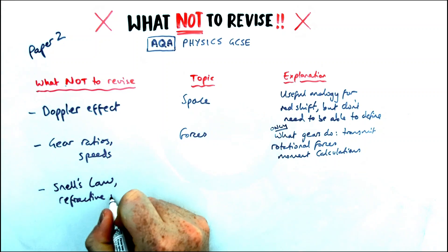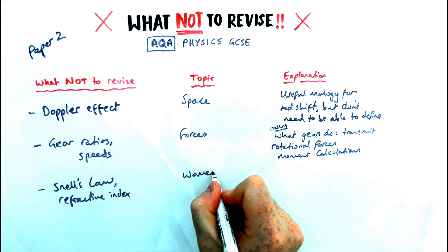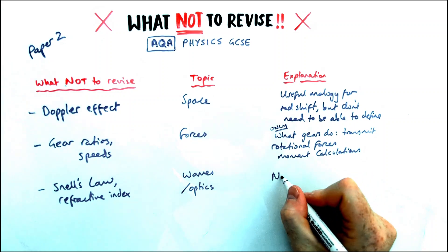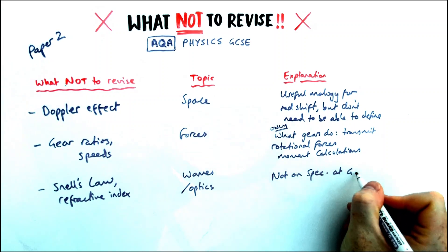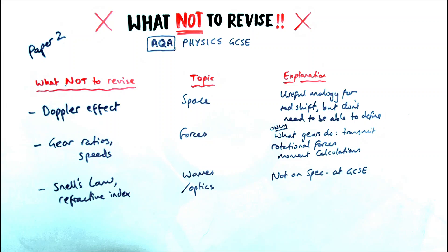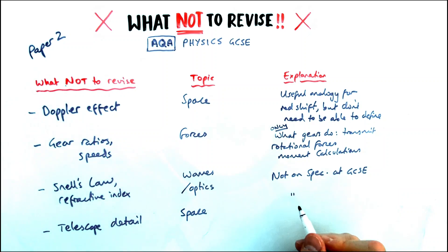Another thing you don't need to know about is refractive index, that is on other exam boards, and something called Snell's Law. It's to do with the angles of refraction, just not on the AQA spec at all, so you can leave that right alone. Another thing you don't need to know about in paper two is all about telescopes and how they work, so detail of specific lenses used. It's useful to be able to be applied, but it's not knowledge you'd be required to know at the start of the paper.